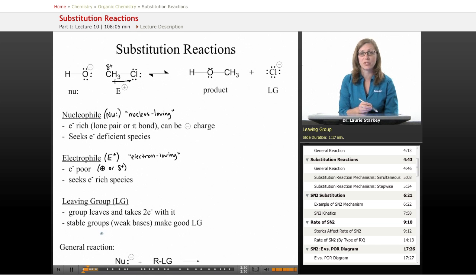We're also going to be learning about what makes a good leaving group. We'll find that stable groups, things that are stable on their own, make very good leaving groups. Things that are weak bases are typically pretty stable, so we'll look for those sorts of features. A general reaction—I should also mention that this leaving group we had here is a chloride. For example, X- makes a very good leaving group. We'll see chloride, bromide, iodide as very common leaving groups. These are all weak bases.